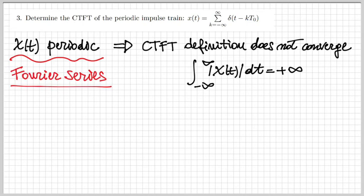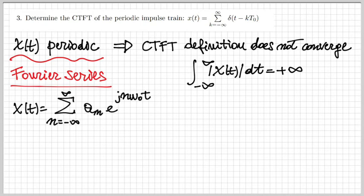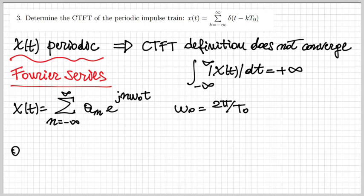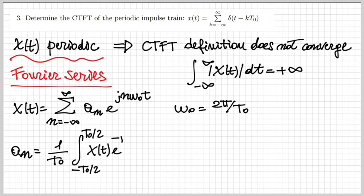The impulse train is defined as the sum of δ(T − kT₀), so it's many deltas centered at integer multiples of T₀, which is the period. With the Fourier series, we express x of T as a weighted sum of complex exponentials: the sum of aₙ times e to the j·n·ω₀·T, where ω₀ is the fundamental frequency defined as 2π over T₀. The coefficients aₙ are given by (1/T₀) times the integral over one period — from minus T₀/2 to plus T₀/2 — of x of T times e to the minus j·n·ω₀·T dt.